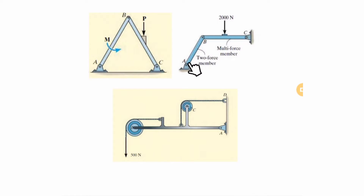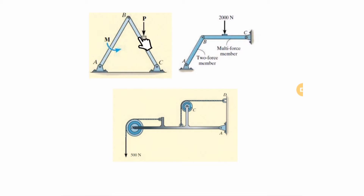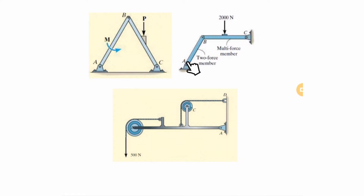A two-force member is one where you have only two connection points and you don't have any forces or moments applied in the middle. For example, here we have two connection points but we are applying a force in the middle — this is NOT a two-force member. This one is also not a two-force member because we are applying a moment in the middle. But this one IS a two-force member.